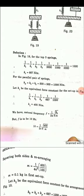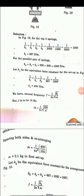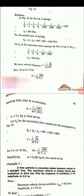Squaring both sides and rearranging, you can get the m value. So m is equal to 1 divided by 4 pi squared, into 400 divided by 100, giving m equal to 0.1 kg for the first setup.